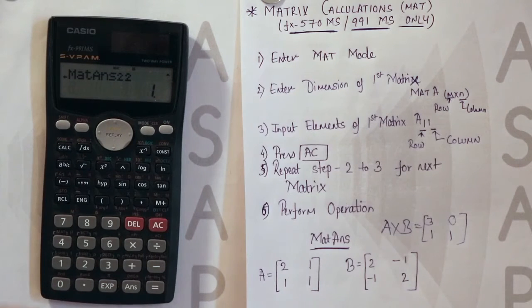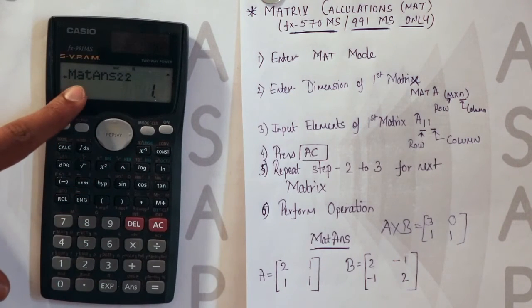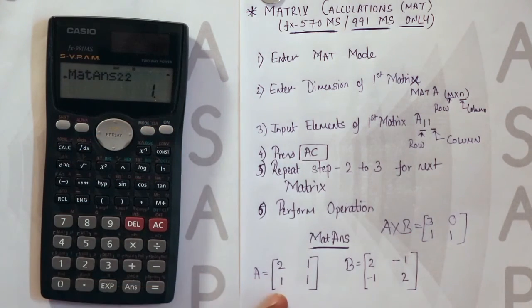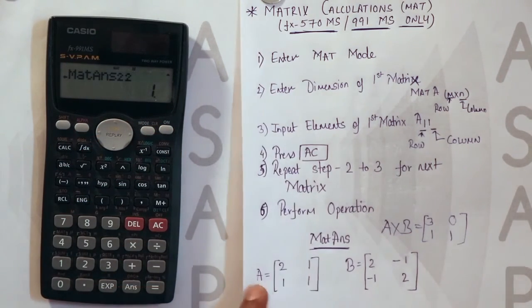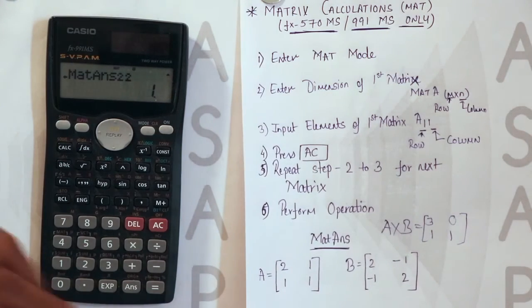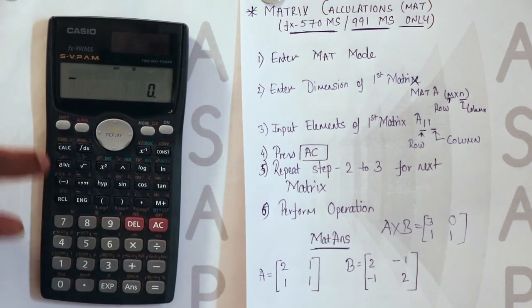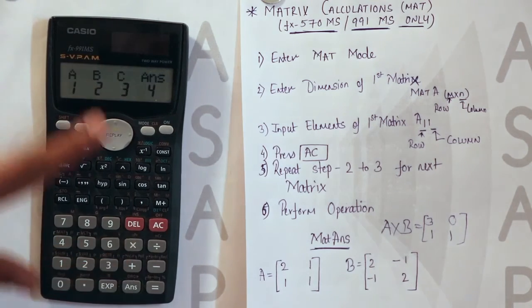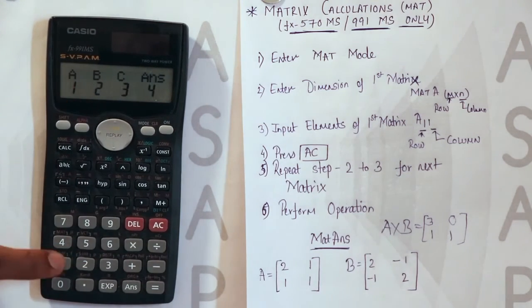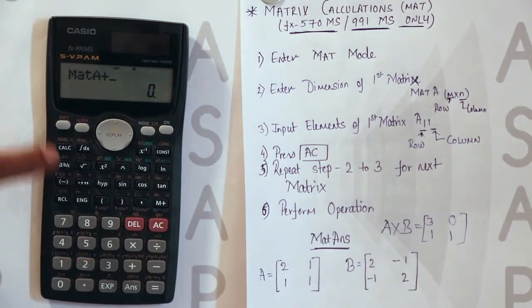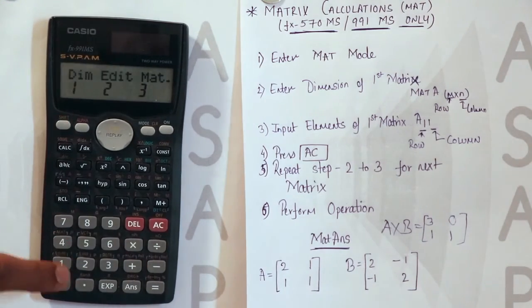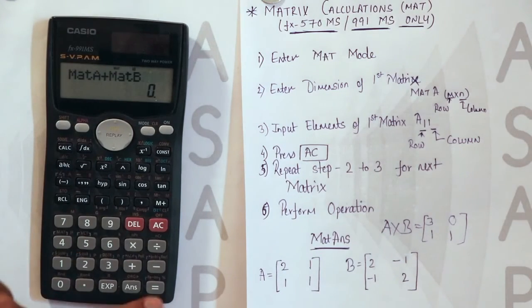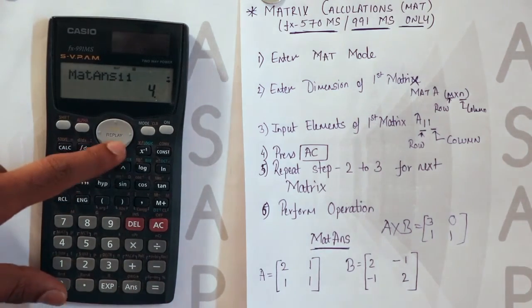So this is the way we perform matrix A into matrix B. Now if you want to perform matrix A plus matrix B. Matrix A minus matrix B. I will show you the steps. It is simple. AC. Shift 4. Then matrix. Then which matrix you need to perform A. Then plus. Then again shift 4. Matrix. And the second matrix B equal to. You will get the answers.